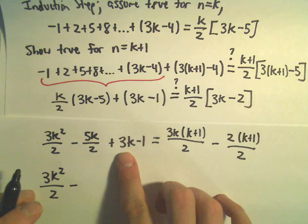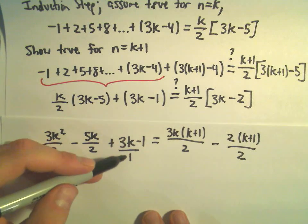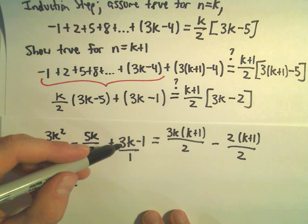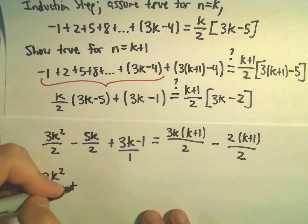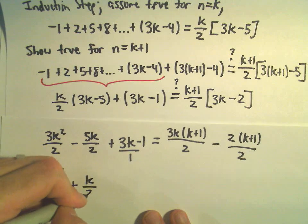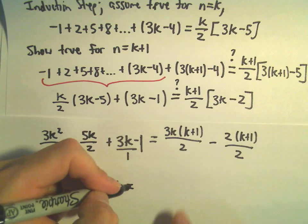I would multiply top and bottom of my 3k over 1. We could multiply top and bottom of that by 2. That would give us 6k over 2. Negative 5k plus 6k would give us positive k over 2. Then we still have our negative 1 left over.